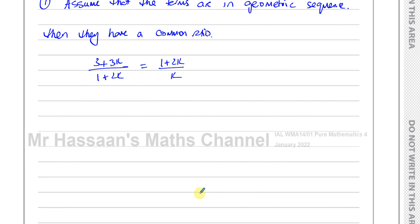So this gives me an equation. Now we have to try to solve this equation. If this equation is not able to be solved, that means we have a contradiction, which means they can't be in geometric sequence. Let's multiply both sides by k and by 1 plus 2k, cross multiply. So you have k times 3 plus 3k equals 1 plus 2k times 1 plus 2k, which is 1 plus 2k squared. This is going to give me 3k plus 3k squared.